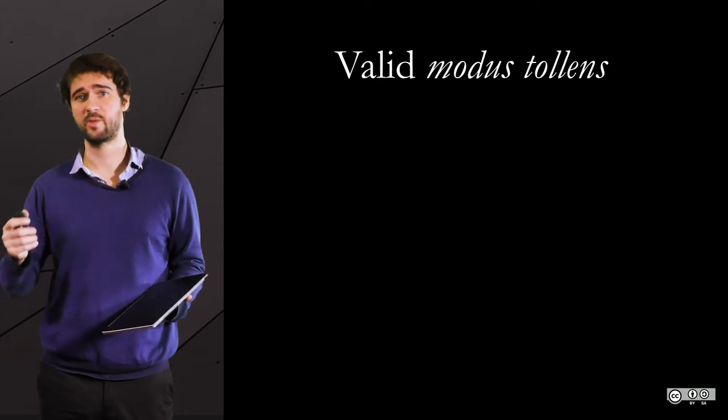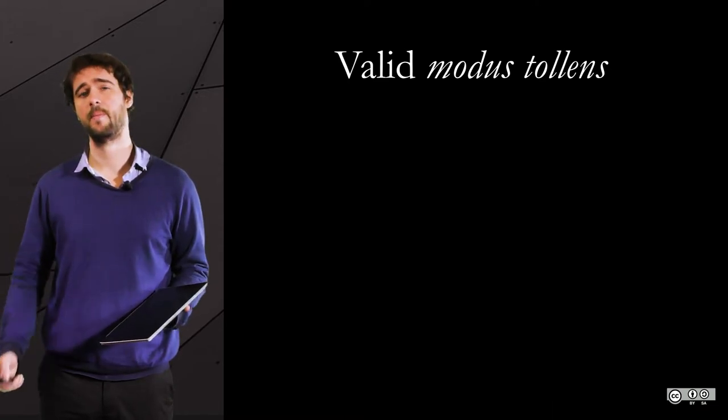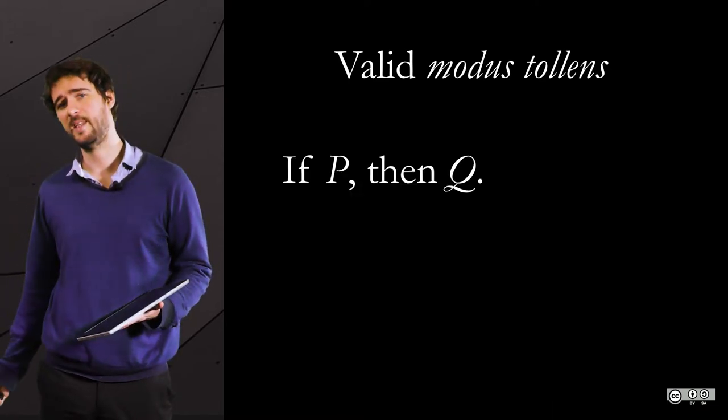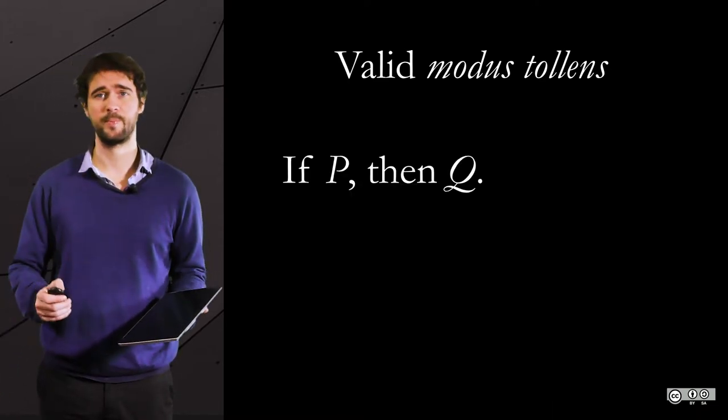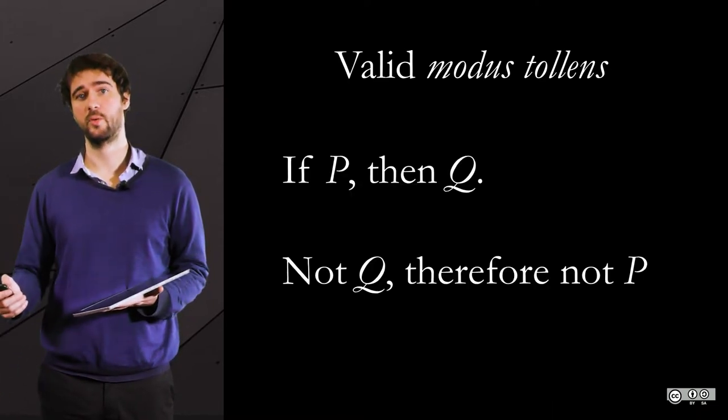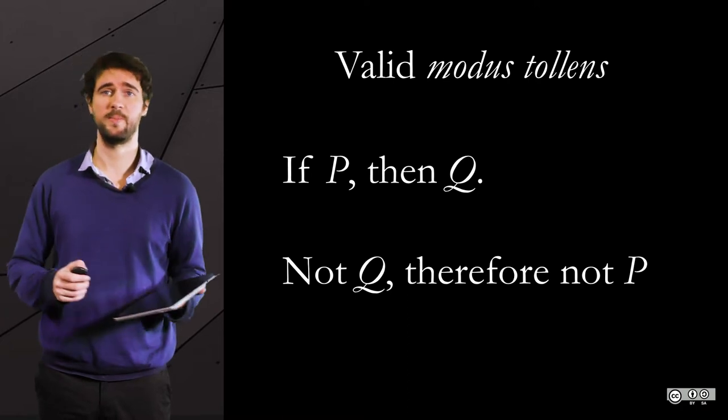Modus tollens has the following structure: If P, then Q. Not Q, therefore not P.